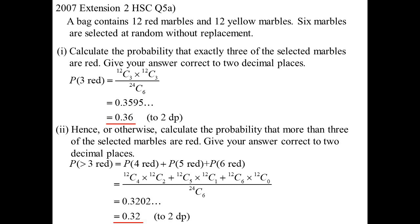Now they did say hence though. Now hence usually means using what you've just done. So they're giving you a clue that hey, there might be an easier way. They did say or otherwise, so this solution is perfectly acceptable. But what could we have done? I could have said this. So probability of greater than three red, I could think about it a different way and use the complementary event idea.